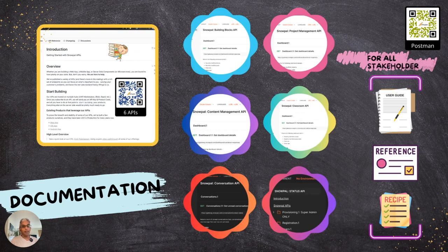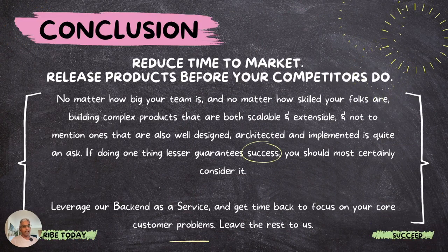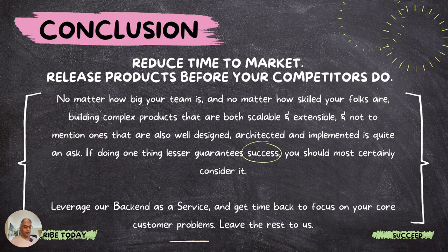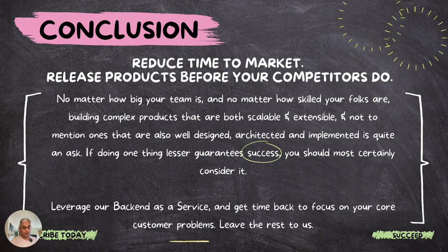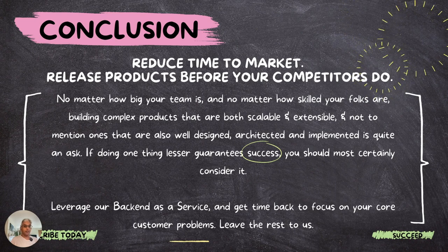Our documentation is plentiful — go to developers.snopel.com. We have guides, API references, recipes, and Postman workspaces. It's meant for all stakeholders — product managers, product owners, and developers. The idea is to reduce your time to market, and we're going to help you do that so you can release your products before your competitors. Don't worry about hiring, staffing, maintaining, and managing server-side teams. Use this to solve all of your server-side problems as your backend as a service. Thank you.